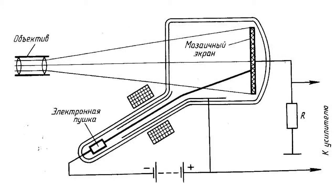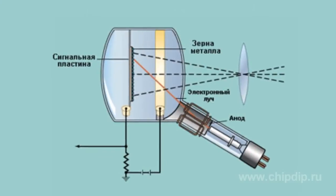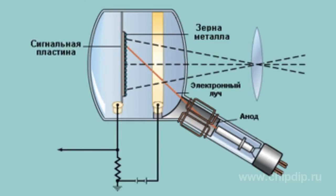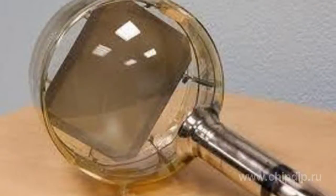An Econoscope consists of a vacuum glass tube that contains a photosensitive mosaic onto which the image is projected. The mosaic is paired with an electron gun located on the side or below the objective, and a system that deflects and focuses the electron ray. The photosensitive mosaic is a dielectric plate consisting of several millions of mutually insulated miniature photoelectric cells — randomly placed silver grains colored with cesium or cesium oxide. The other side of the base plate is coated with metal and serves as the signal plate.